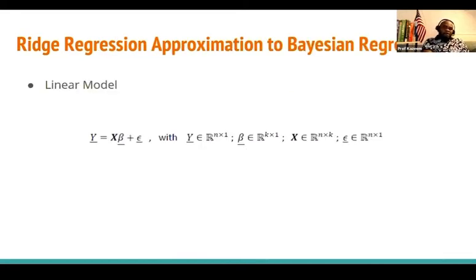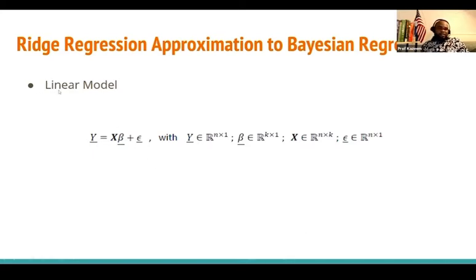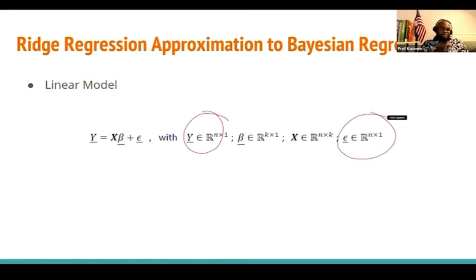The next thing I want to walk you through today — which is actually the main topic — is how we can actually derive the ridge regression from Bayesian linear regression. I'm going to start from the specification of a linear regression model. This gives us the dimensions of Y, the regression parameter, the design matrix X, and the stochastic error component. Note that the dimension of the response variable and the stochastic component are the same.